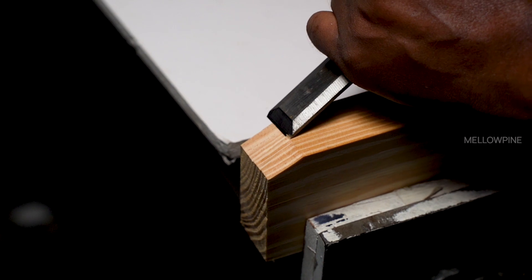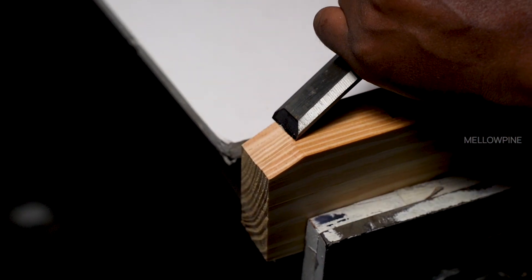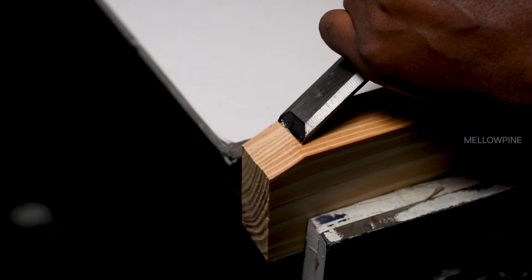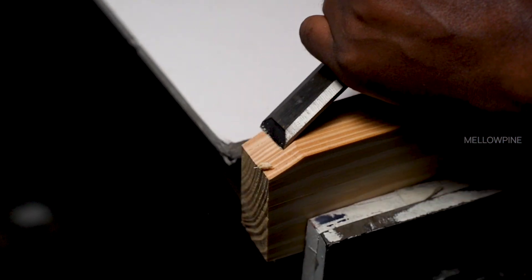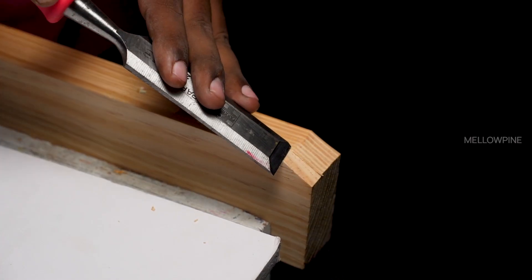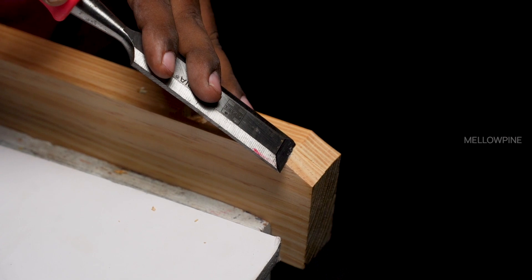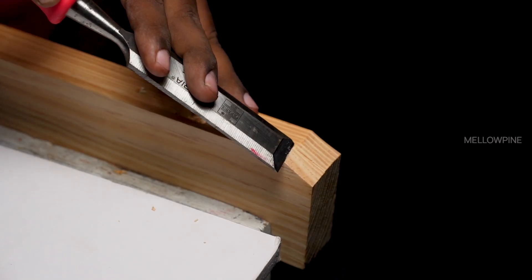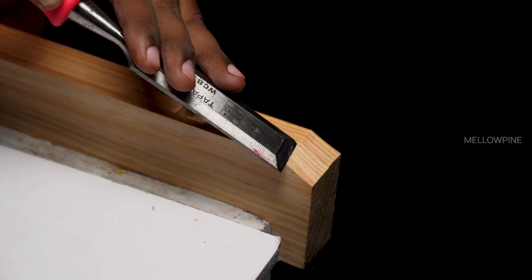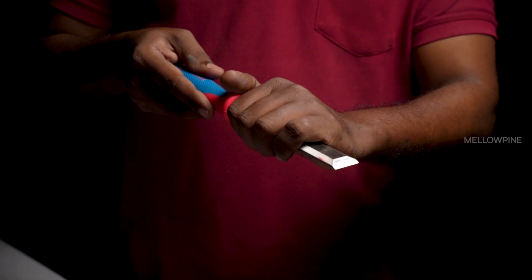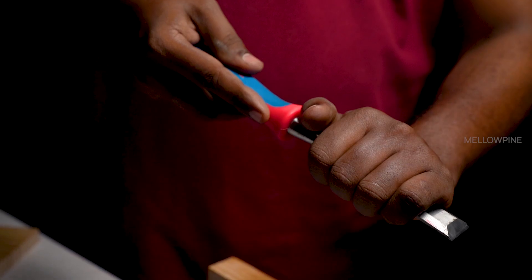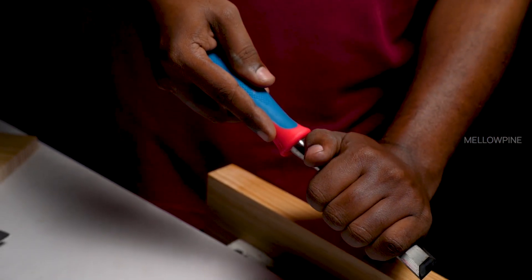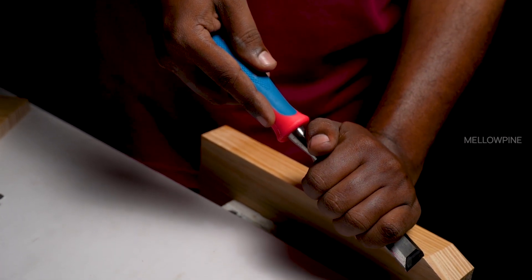Paring is one of the primary techniques used with chisels, particularly for cleaning up rough surfaces or joints. It involves a horizontal slicing motion that requires careful control and finesse. Ensure the chisel has a flat back and a sharp cutting edge, which is crucial for clean and precise paring. Grasp the chisel handle with the dominant hand. Use your other hand to support and control the blade, providing a level surface to guide the chisel along the workpiece.